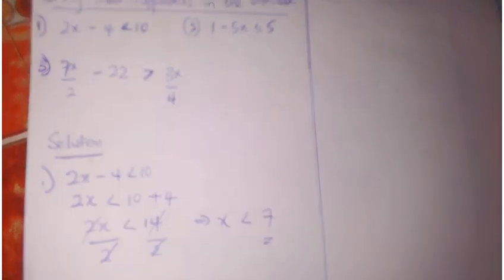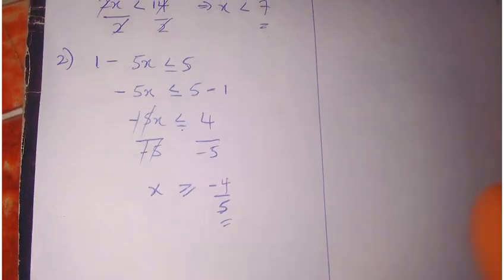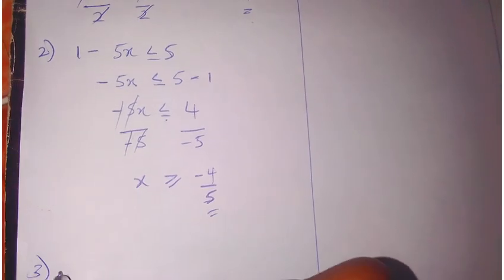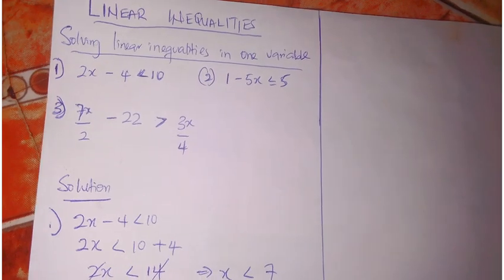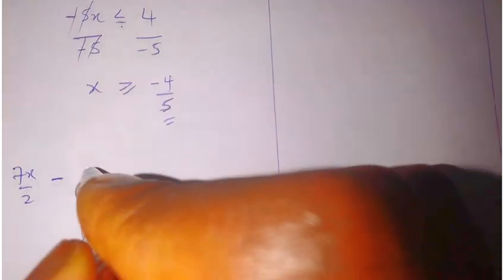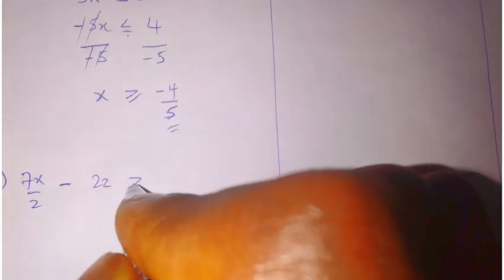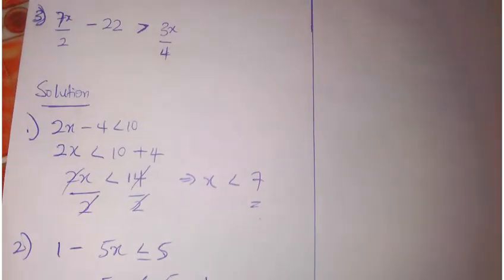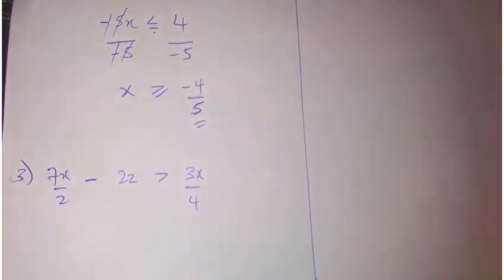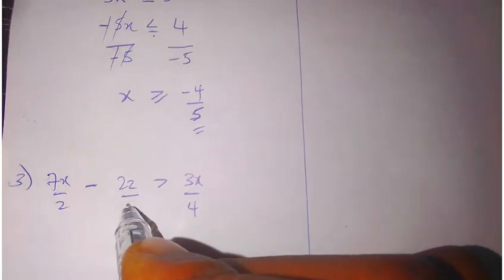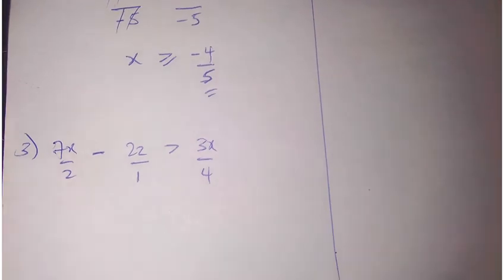Finally, we have 7x over 2 minus 22 over 1 to be greater than 3x over 4. The thing I can do here is find the LCM. There are two ways. First, you find the LCM of all of them. Or just multiply all through by the general LCM, which is 4.